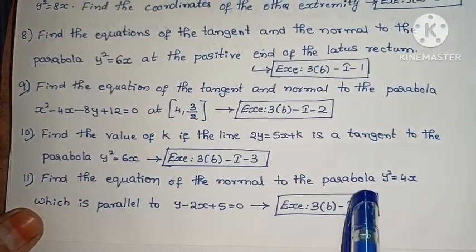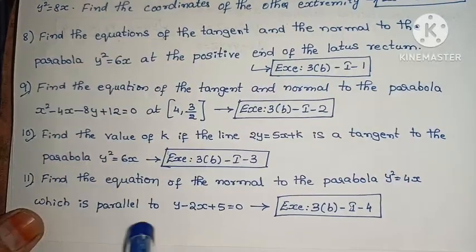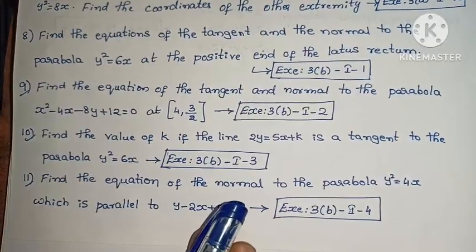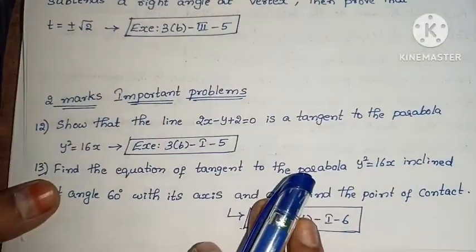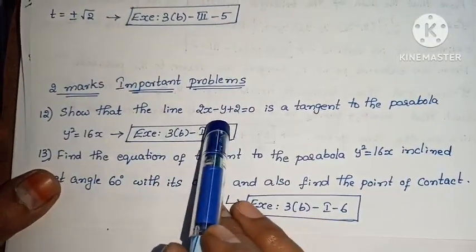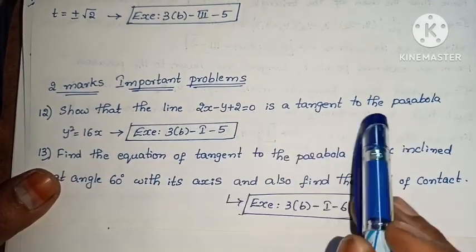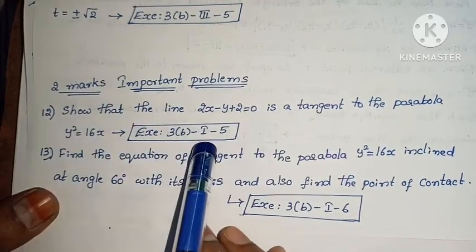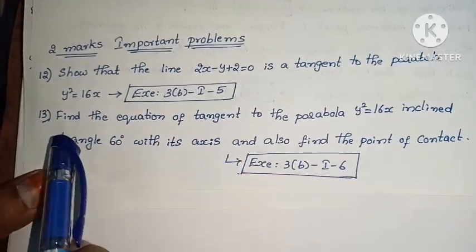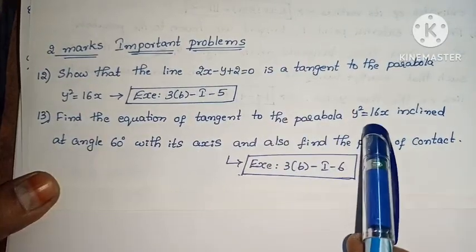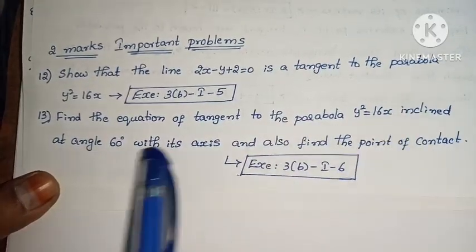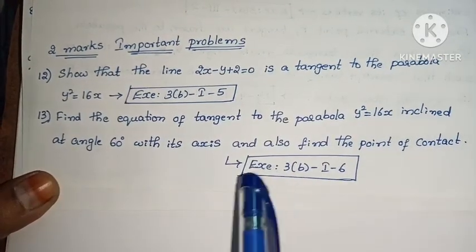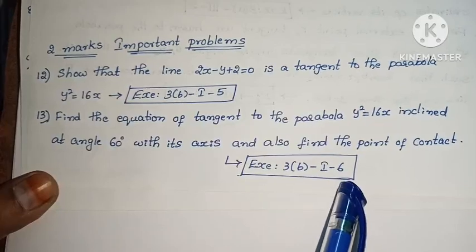Next, find the equation of the normal to the Parabola y² = 4x which is parallel to y - 2x + 5 = 0. Exercise 3, second part, fourth problem. Next, show that the line 2x - y + 2 = 0 is a tangent to the Parabola y² = 16x. Exercise 3, second part, fifth problem. Next, find the equation of the tangent to the Parabola y² = 16x inclined at angle 60° with its axis and also find its point of contact. Exercise 3, second part, sixth problem.